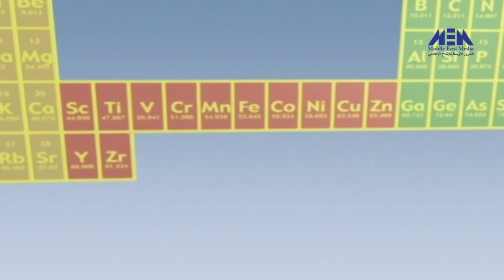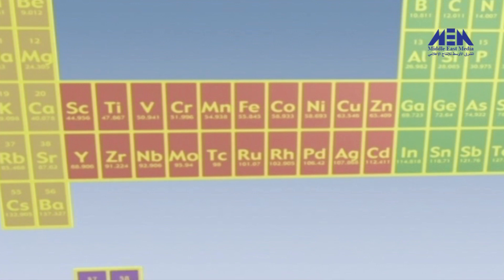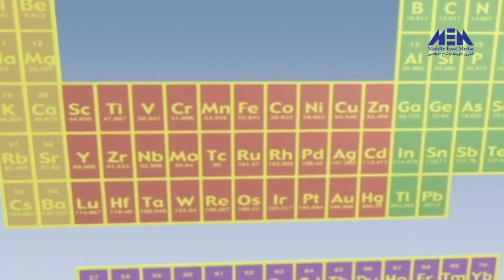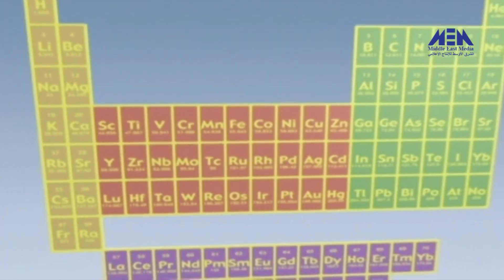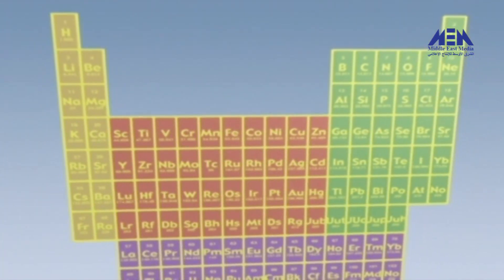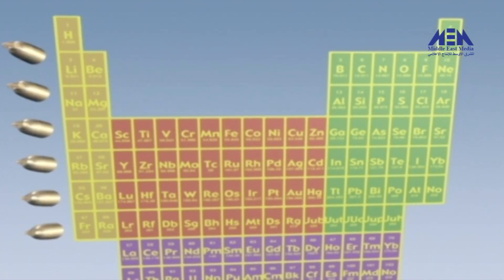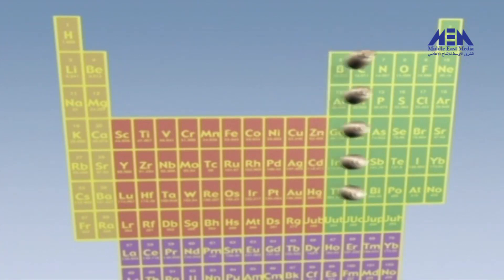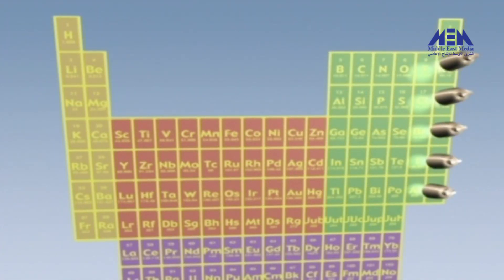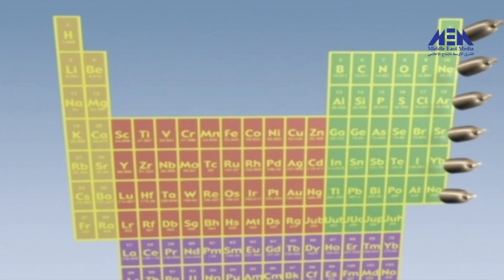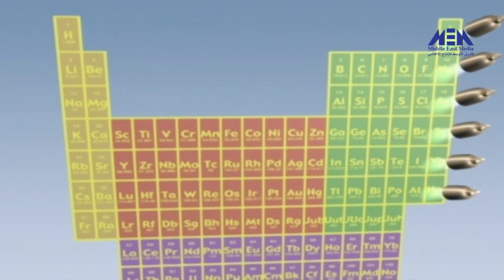The periodic table of the elements has this name because of the way it is arranged. When the elements in the table are ordered row by row in ascending value, chemical similarities of the elements periodically repeat in columns. For example, the first column of similar elements are all highly reactive silvery metals, with the exception of hydrogen — the lightest element — which is an oddball. The 17th column of the modern table is a collection of highly reactive gases, the halogens. And the 18th column is a set of highly unreactive gases, the so-called noble gases.